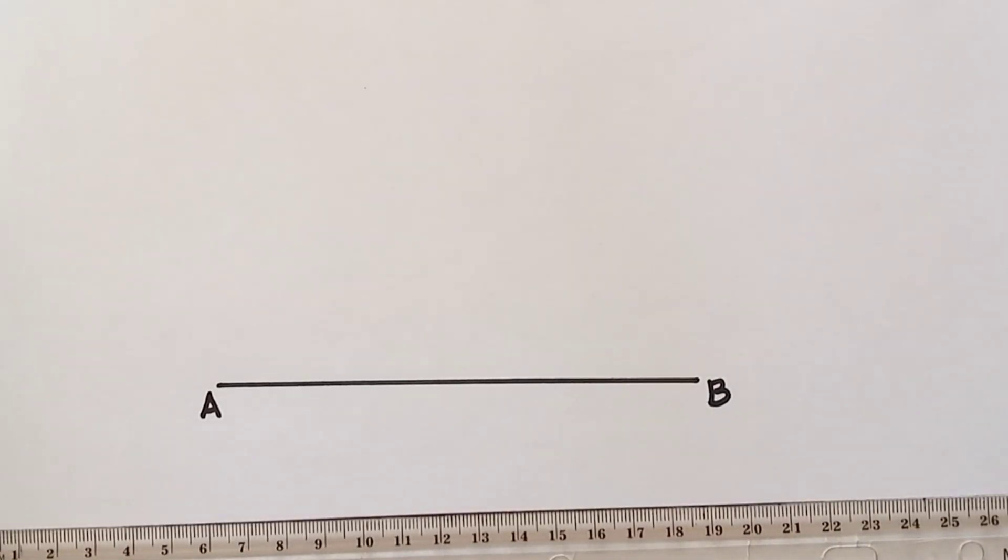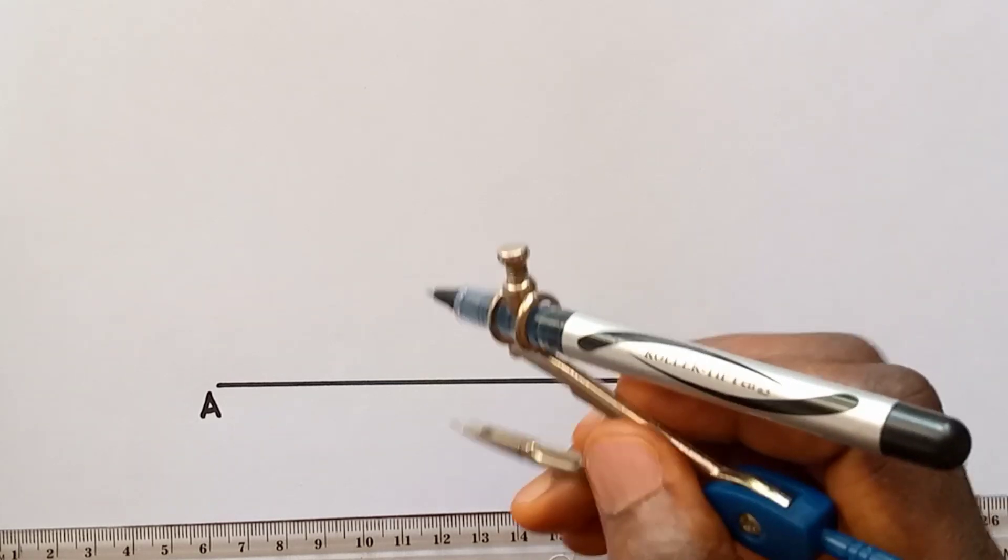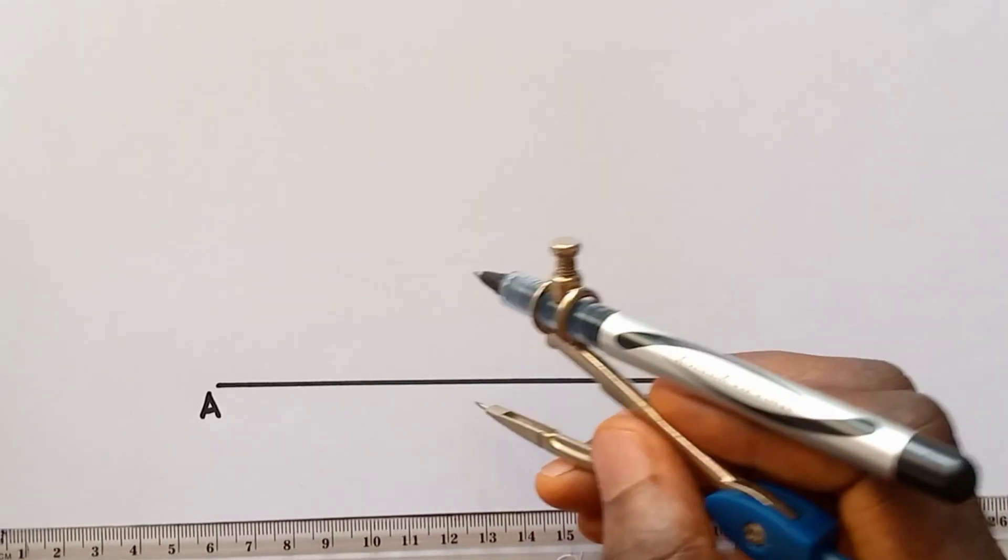Now after this, the second step is to locate your point C, which is the center. In the case of this tutorial, if you are given a particular dimension, you can divide the length by two. Or since there is no specific dimension, you choose your preferred point as your C, which is your center. So I'll be going with this point - this is my C.